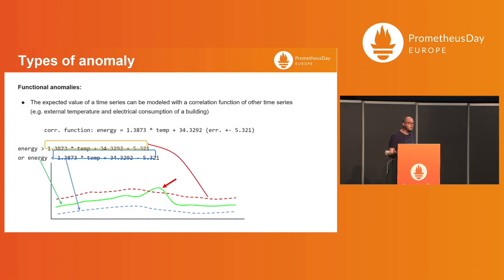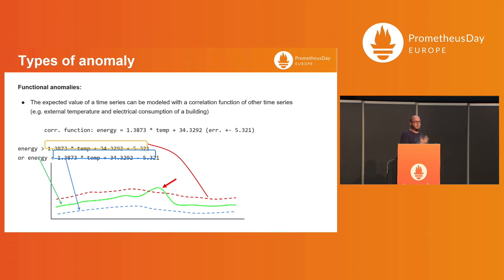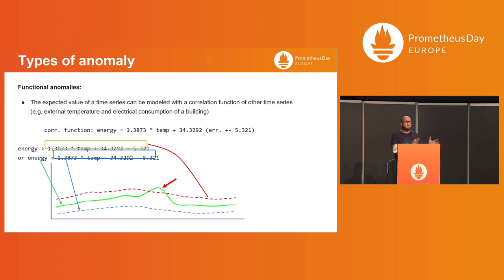Last, there are some scenarios — not common, but possible — where you have a correlation function that can predict a value according to another time series. For example, in the case of energy consumed by a building, it's a function of external temperature. If outside you have 25 degrees, the building should consume X kilowatts. If not, you have a problem. You can model this directly in PromQL: write the correlation function plus the error for the upper limit, or minus the error for the lower limit, and just check if the value is outside that safe band.